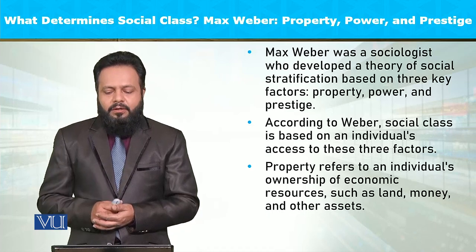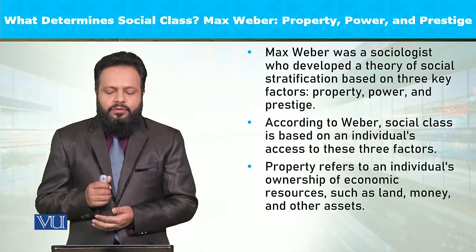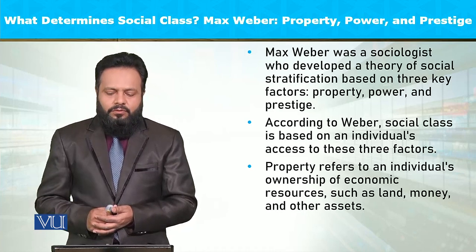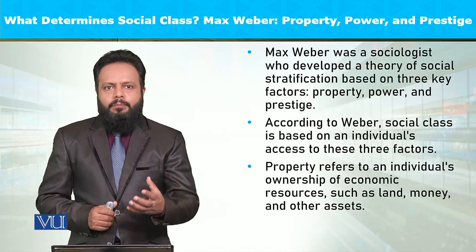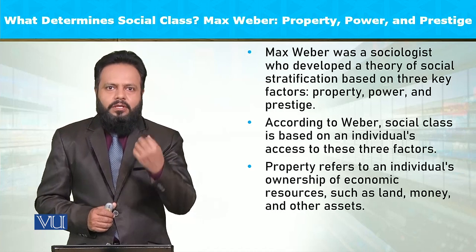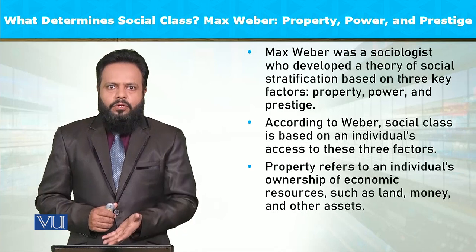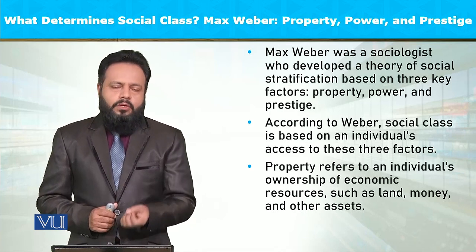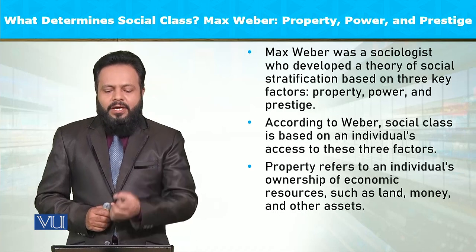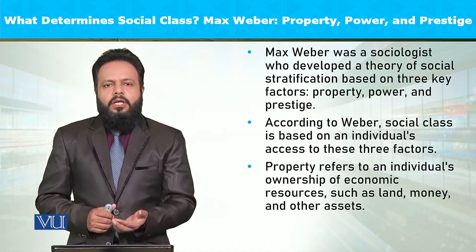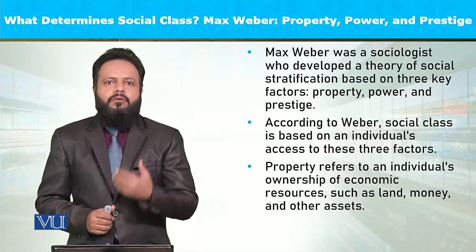According to Weber, social class is based on an individual's access to these three factors. यह depend करता है किसी के पास किस factor तक की access है — کچھ لوگوں کے پاس صرف property होगी، کچھ کے پاس power اور کچھ کے پاس prestige। जितनी ज्यादा factors किसी के पास होंगे, उतनी ही उसकी social class high होगी।